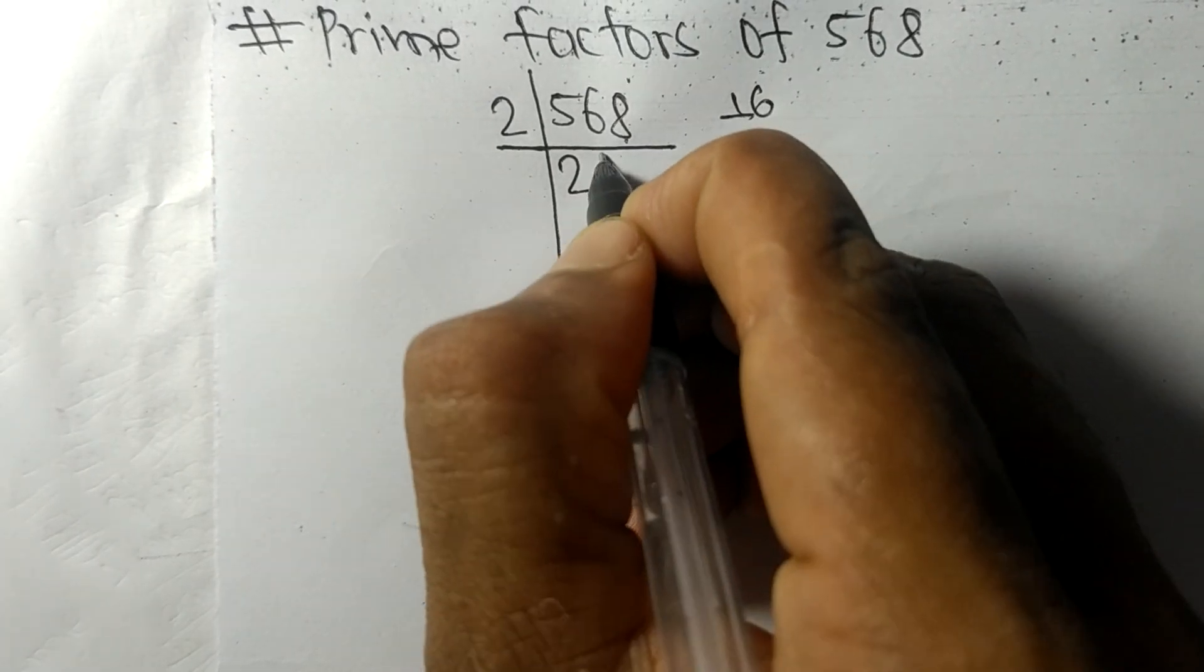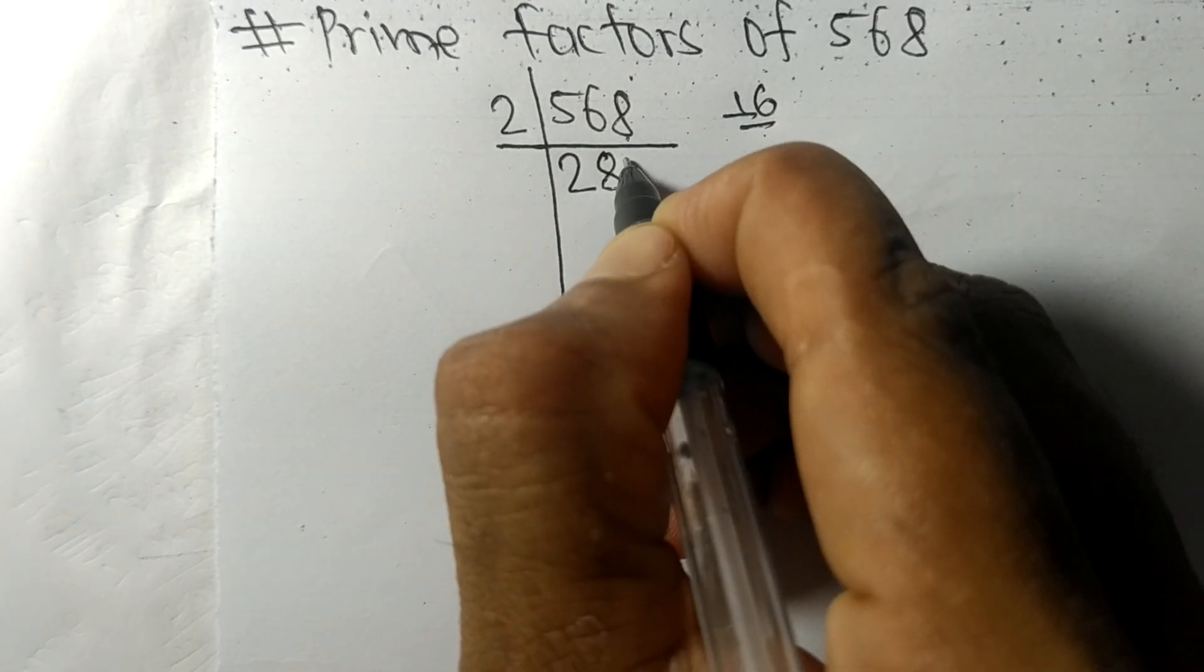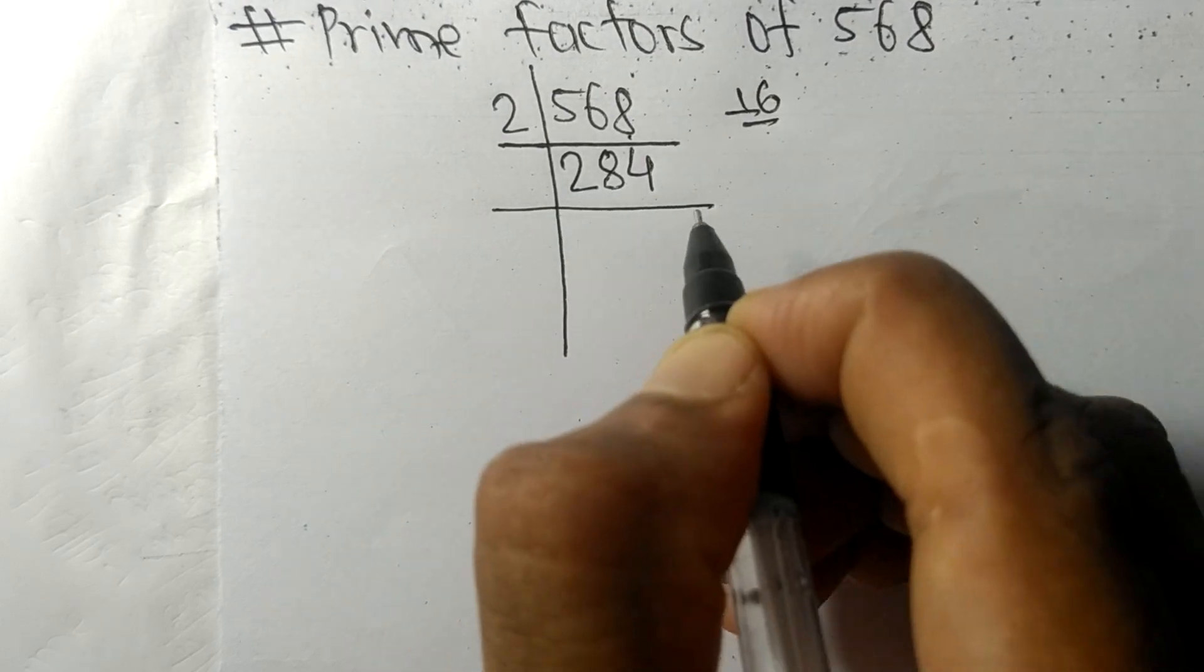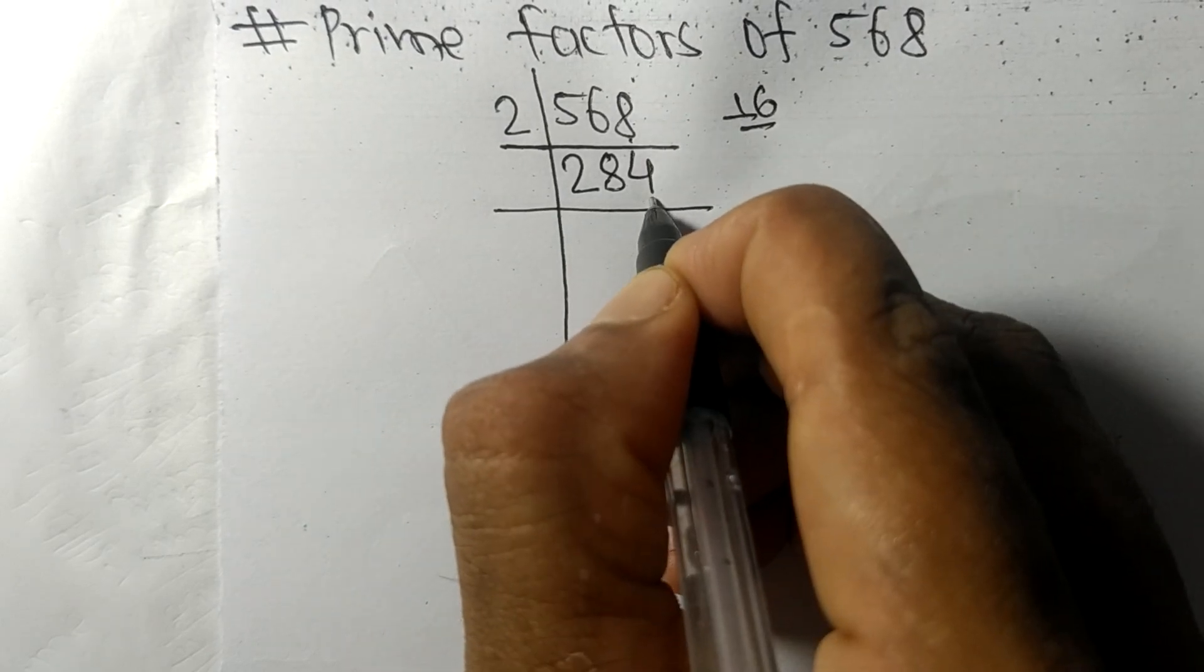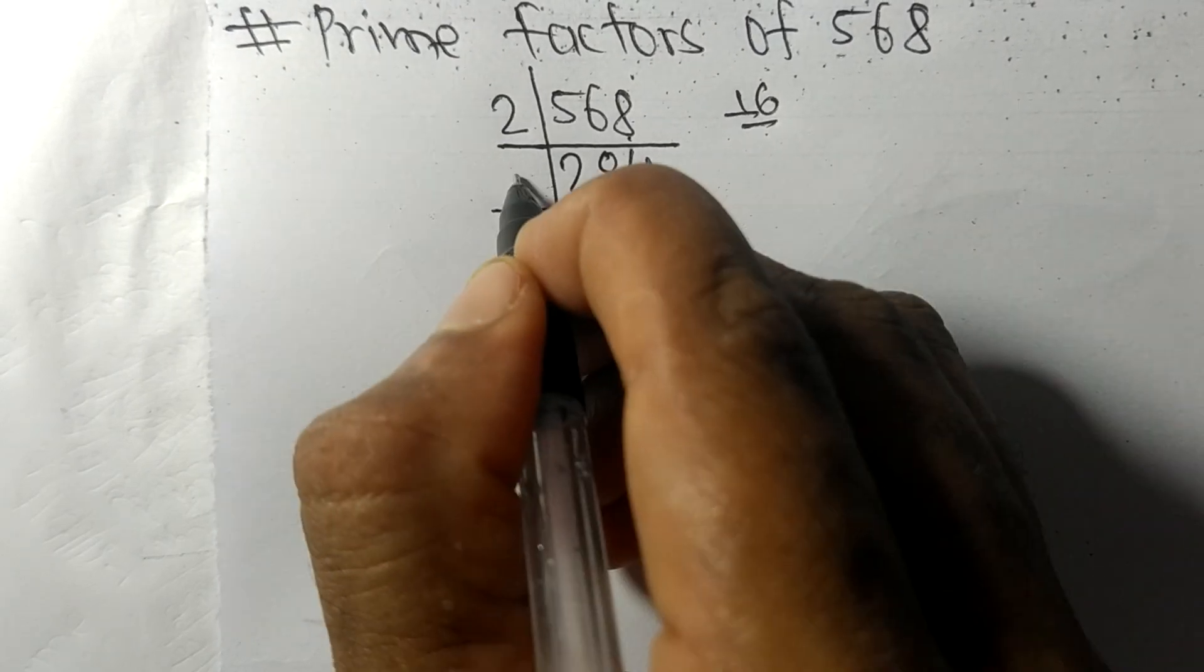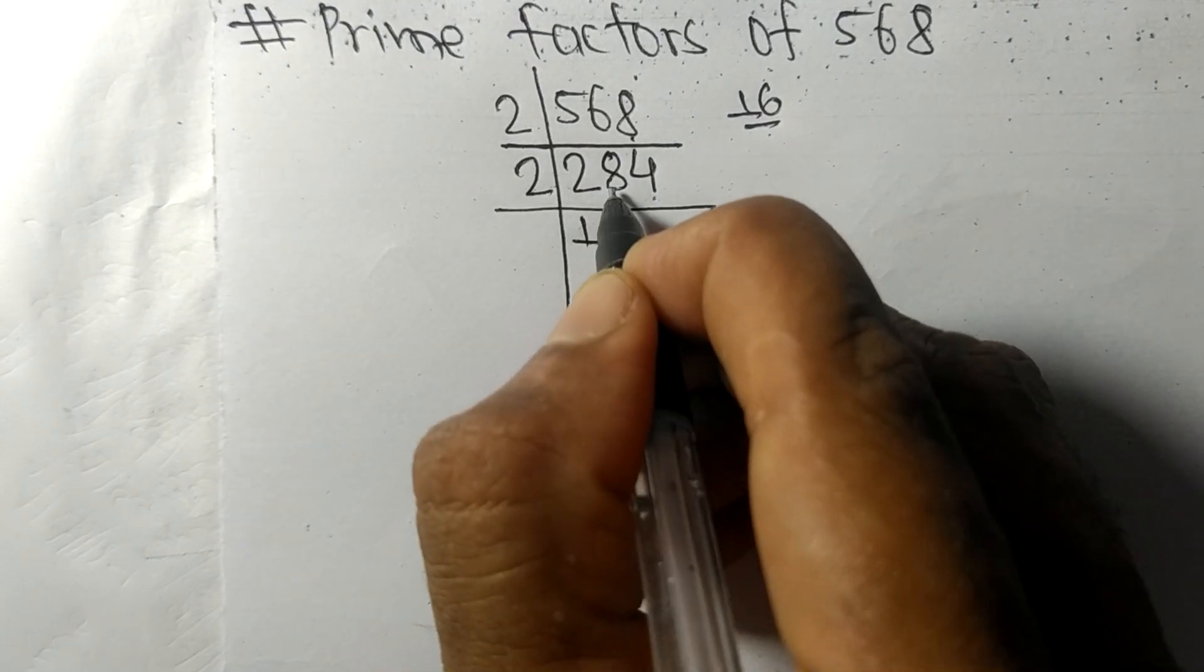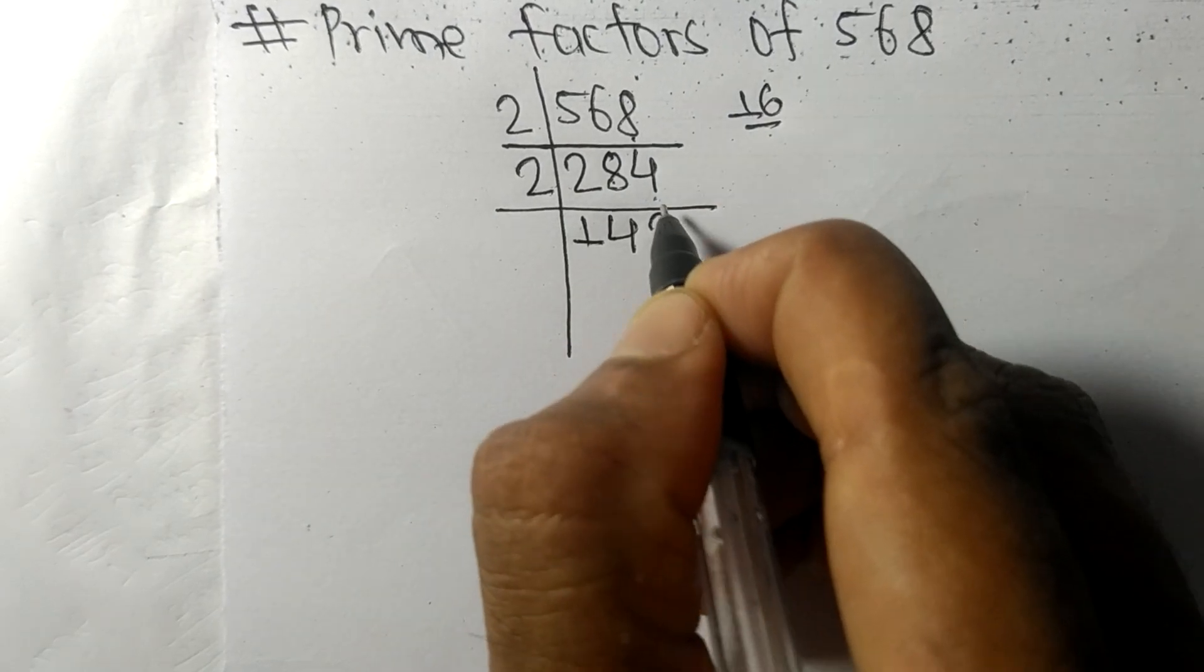Again we have even number 4 at last, so 284 is divisible by 2. Dividing: 2 times 1 is 2, 2 times 4 is 8, 2 times 2 is 4. We get 142.